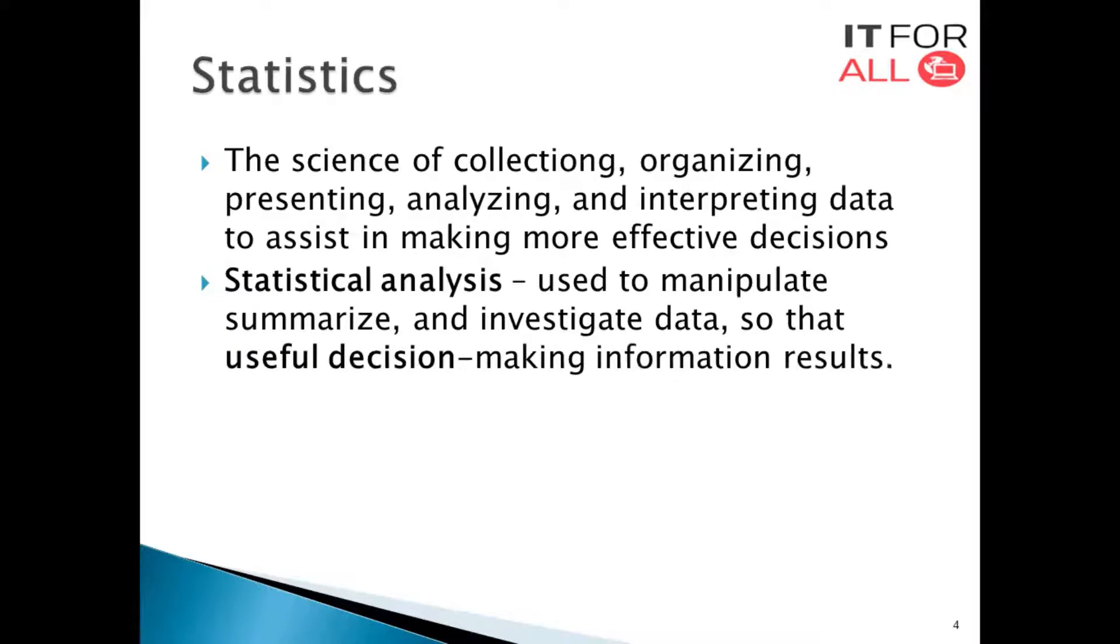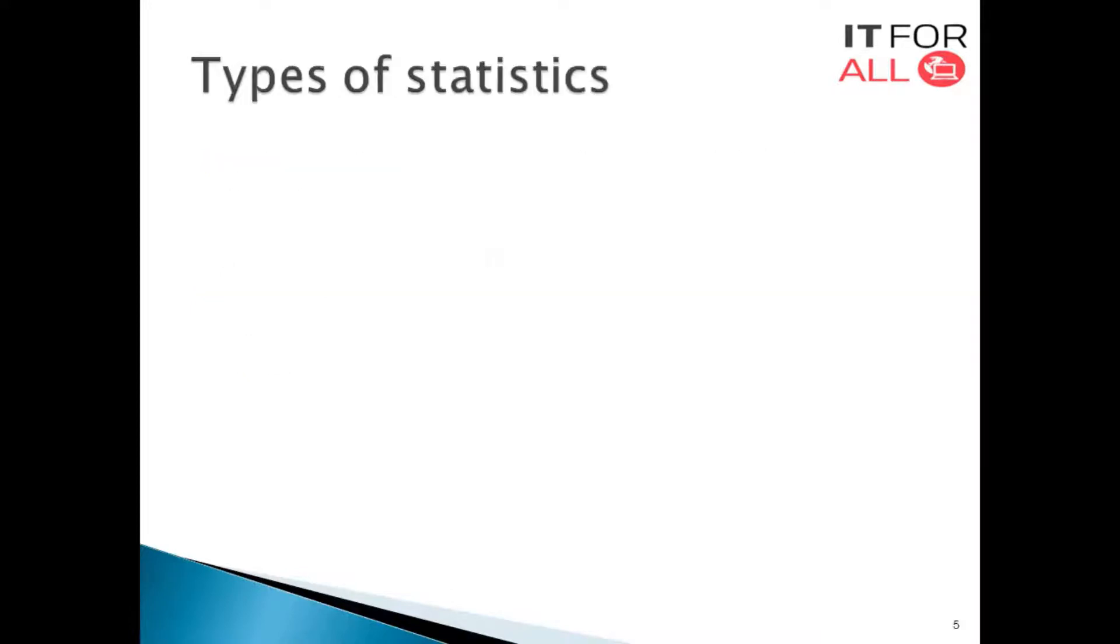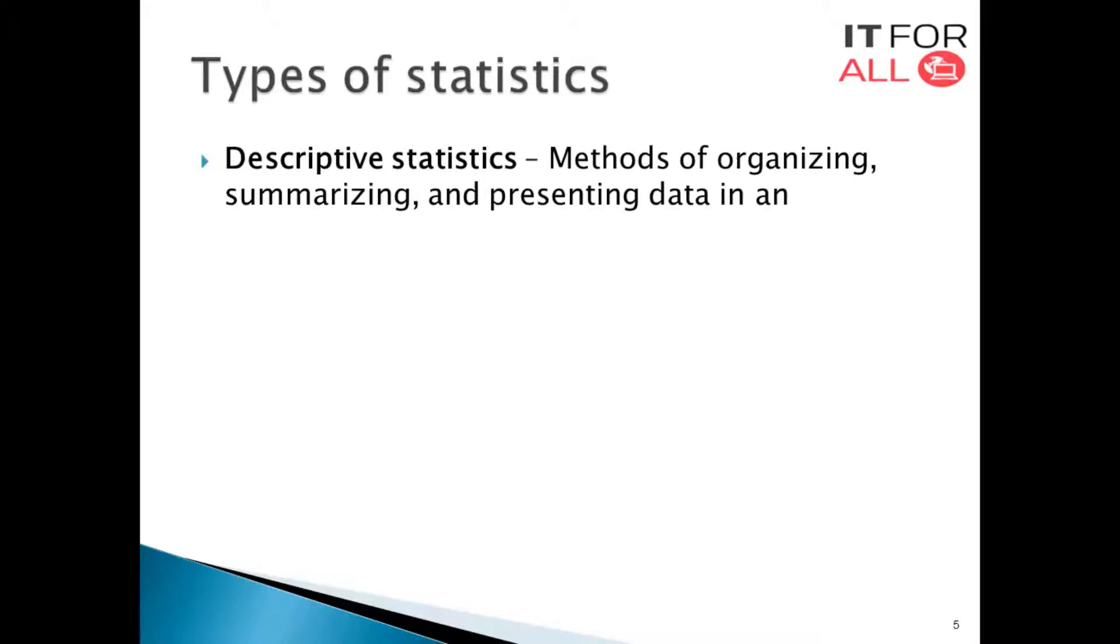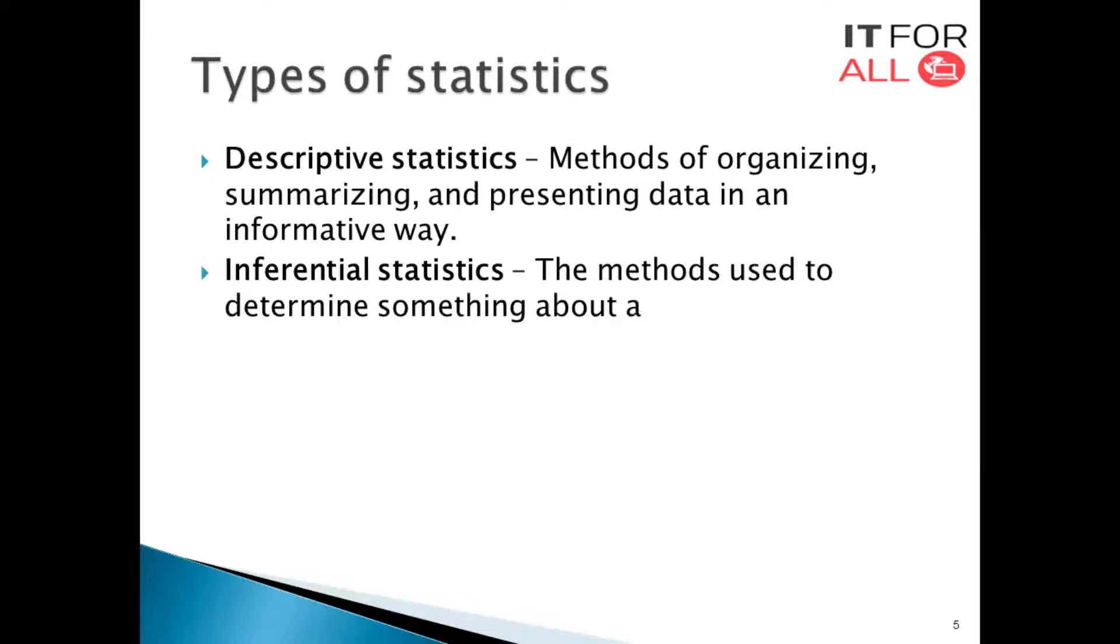There are two types of statistics: descriptive statistics and inferential statistics. Descriptive statistics are methods of organizing, summarizing, and presenting data in an informative form. Inferential statistics are methods used to determine something about a population on the basis of a sample.